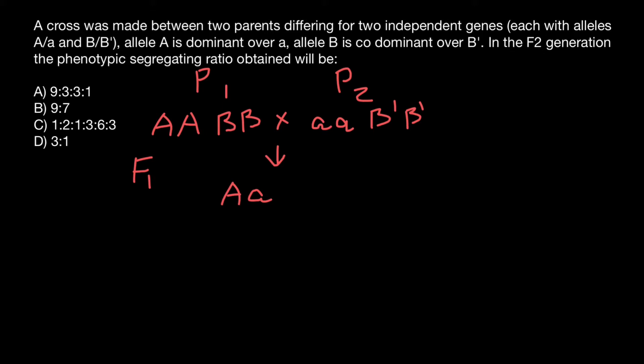As for gene B, from parent one all the progeny can only get dominant allele B — capital B — and from parent two they can only get B'. So the genotype for gene B would be capital B and capital B'.